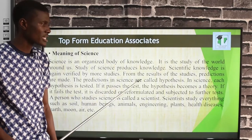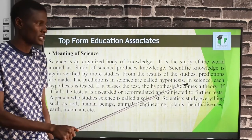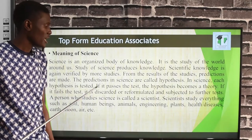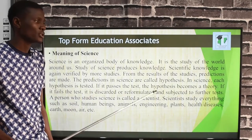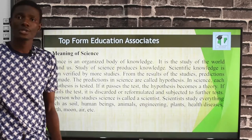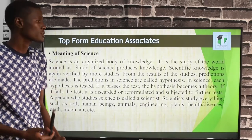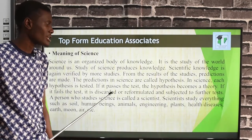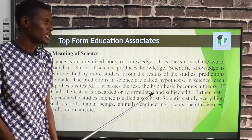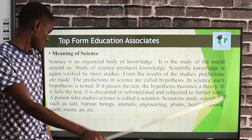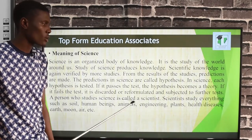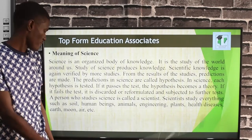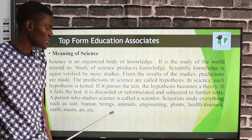The predictions in science are called hypotheses. Each hypothesis is tested. If it passes the test, the hypothesis becomes a theory. If it fails the test, it is discarded or reformulated and subjected to further tests. A person who studies science is called a scientist. Scientists study everything such as soil, human beings, animals, engineering, plants, health, diseases, the earth, moon, air, and many others.